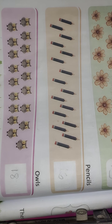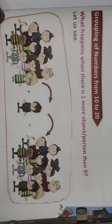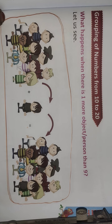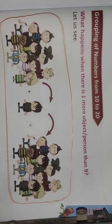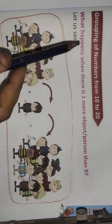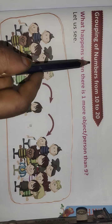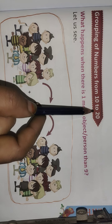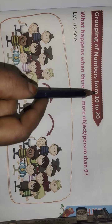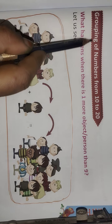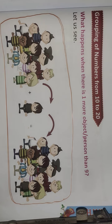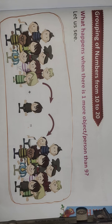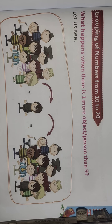Do you know how to count numbers with the help of objects? Counting numbers with the help of fingers and objects is now completed. Now we are going to discuss about grouping of numbers from 10 to 20. Grouping means a collection of things or persons — that is called a group.